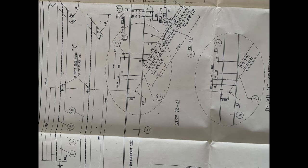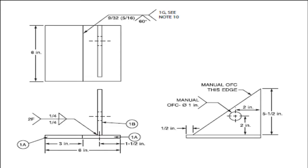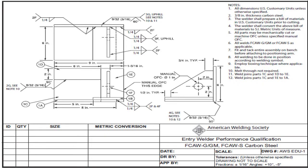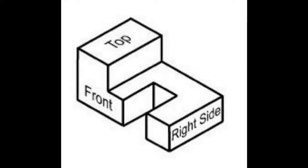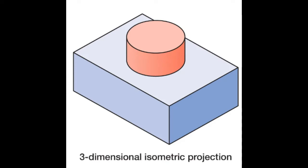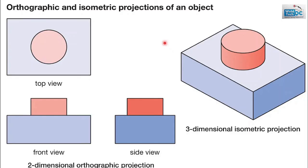Let us discuss why engineering drawings are shown in two or three orthographic views — orthographic projections — and why it is not possible to show them in a three-dimensional isometric projection. An object may be shown pictorially using isometric projection, but definitely not in its true shape and sizes. The size and shape may look a little distorted and cannot be used for engineering purposes. That is the reason we have to use orthographic projections.